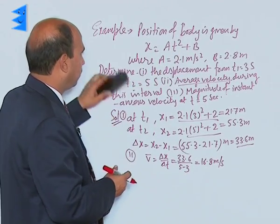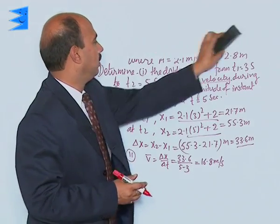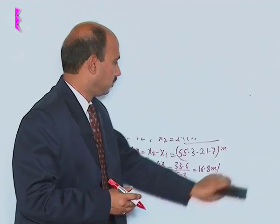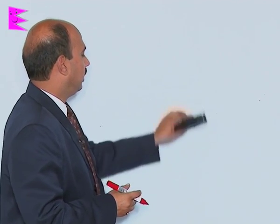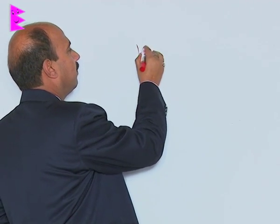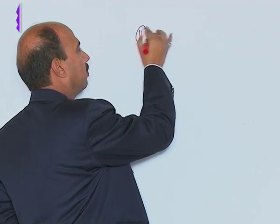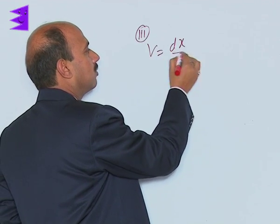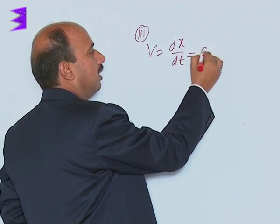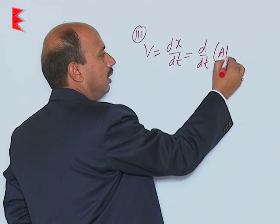I am just removing this part. For instantaneous velocity we can write V, that is third part of the question, V = dx/dt, that was d/dt of (At² + B).